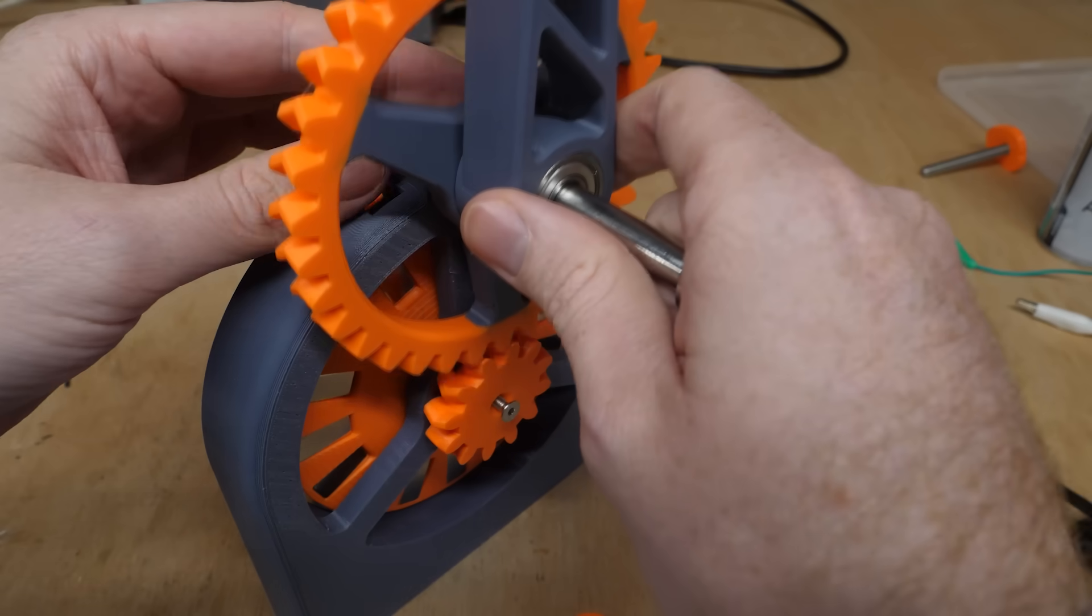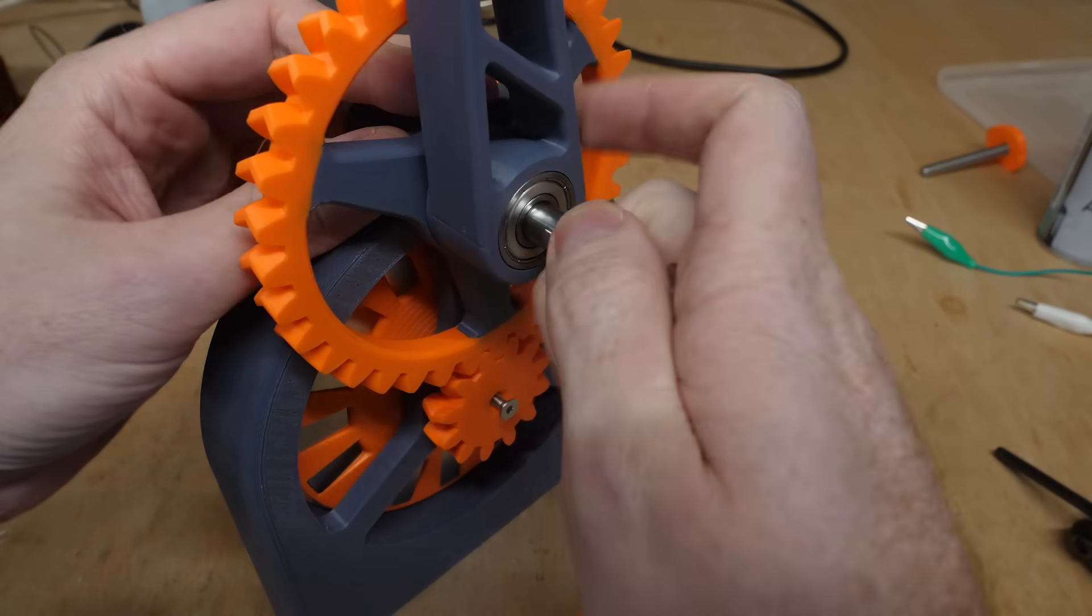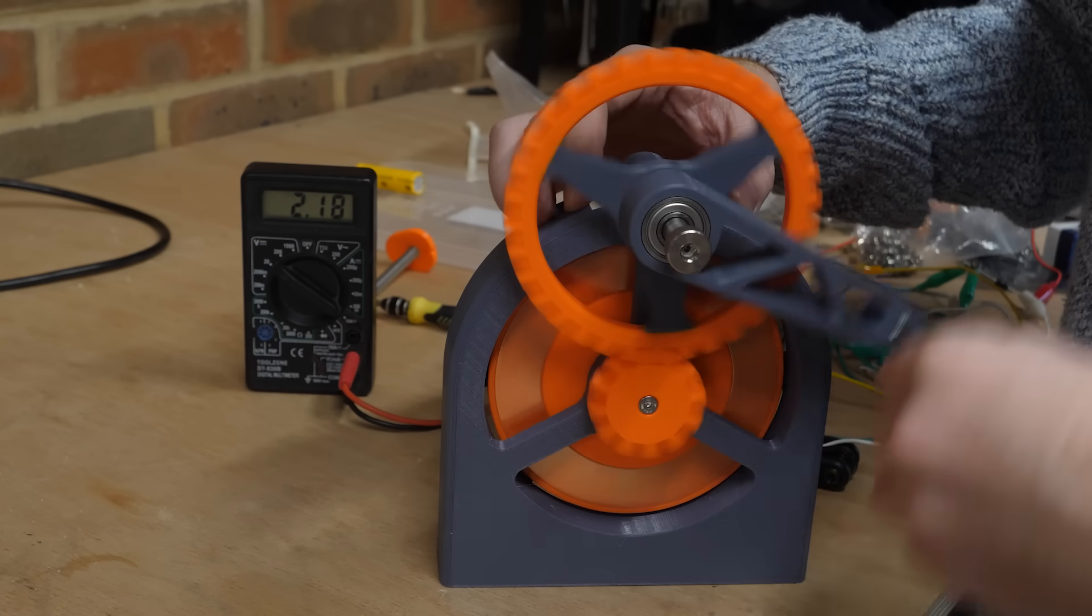Another factor that affects the output voltage is the speed at which the magnets pass the coils. So I 3D printed a gear ratio that'll allow me to spin the rotors faster, which increases the voltage significantly.